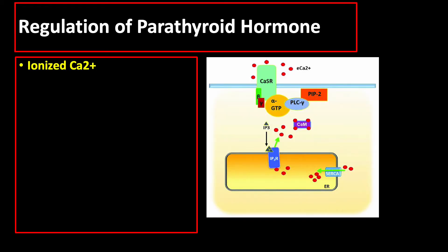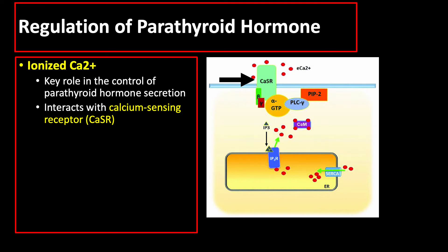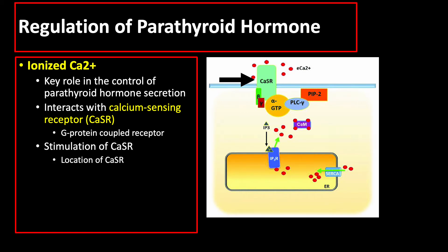Ionized calcium plays a key role in the control of parathyroid hormone secretion by interactions with a calcium-sensing receptor, or CASR. CASR is a G-protein-coupled receptor for which calcium ions act as the primary ligand. If there is a high level of ionized calcium, it stimulates the calcium-sensing receptor. These calcium-sensing receptors are found in the parathyroid gland, in the kidneys, and also in the brain and the C-cells of the thyroid gland.